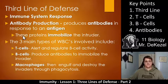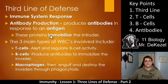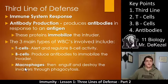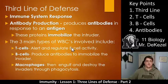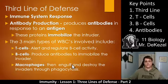The purpose of these antibodies, or these proteins, is to immobilize the intruder. There are three main types of white blood cells involved: T-cells, which is key point two; B-cells, which is key point three; and macrophages, which we talked about already. T-cells' job is to alert and regulate B-cells. B-cells' job is to produce antibodies to immobilize the invader, and macrophages engulf the invaders through phagocytosis.